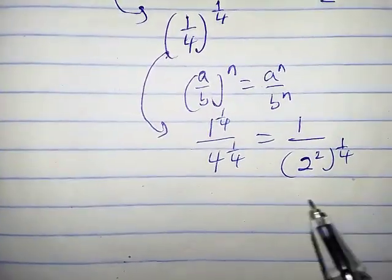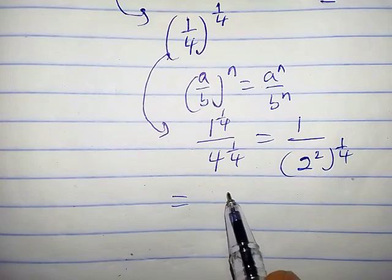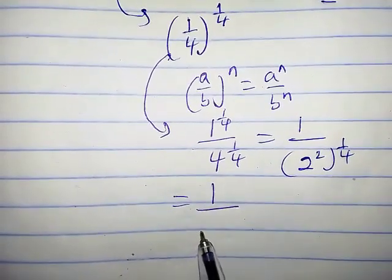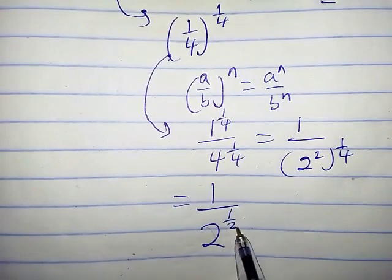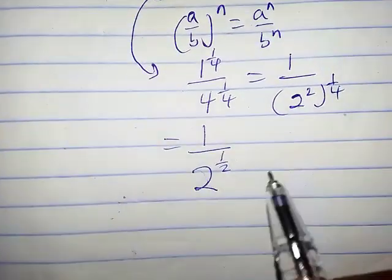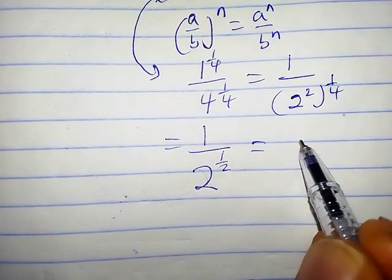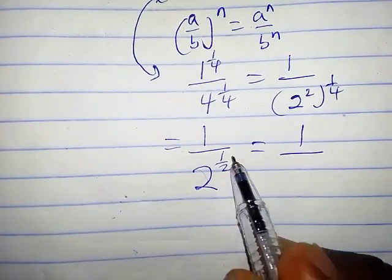So we have times 1 over 4. This equals, we have 1 at the numerator over 2, 2 times 1 over 4, that is half. So we have 1 over 2 raised power half, which is the same thing as square root of 2.